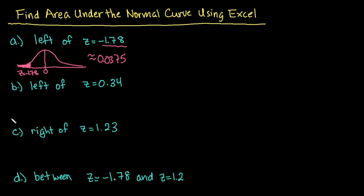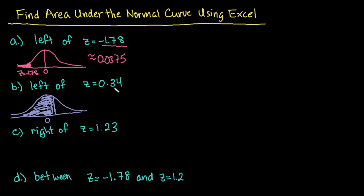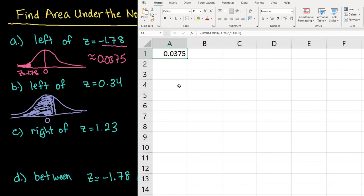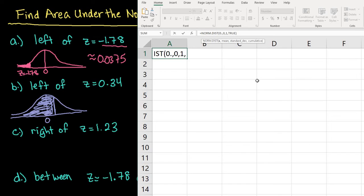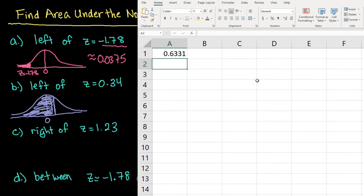For the next one, it asks us to find the area to the left of Z equals 0.34. In this case, 0.34 is positive so it will be on the right side, less than one standard deviation above the mean — so we shade that region and look for that area. Since this is a positive Z-score and we're looking for the area to the left, we know more than 50% of the area is shaded because at the mean you have exactly 50%. The only thing we change is our Z-score from negative 1.78 to 0.34, and when I hit enter it gives me the answer — more than 50% as expected, because it's above the mean and we're looking for area to the left.